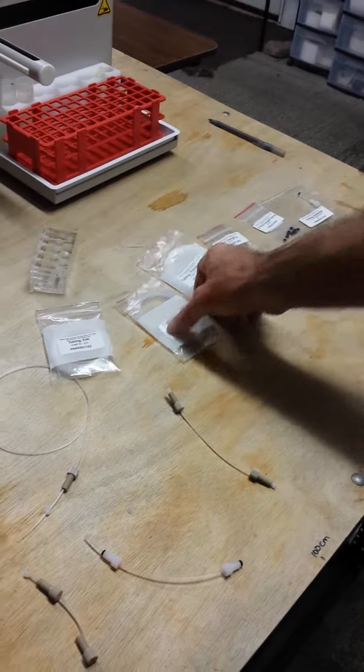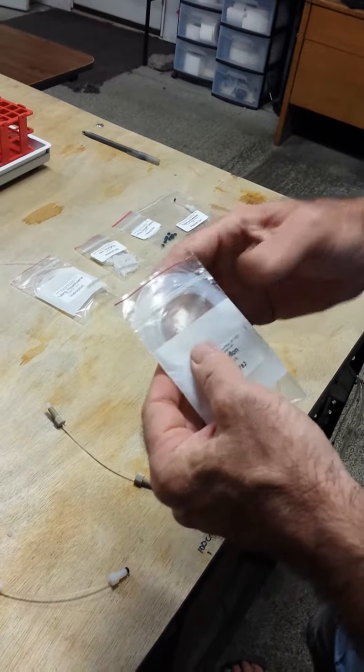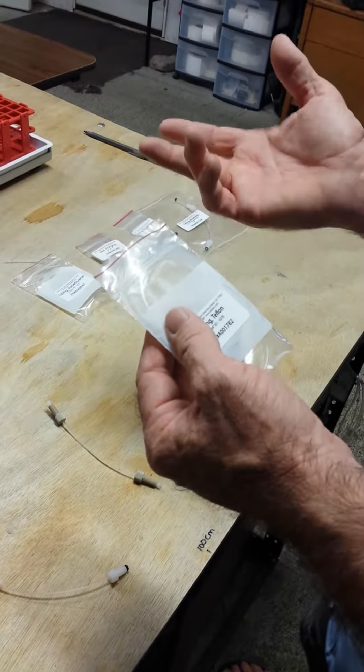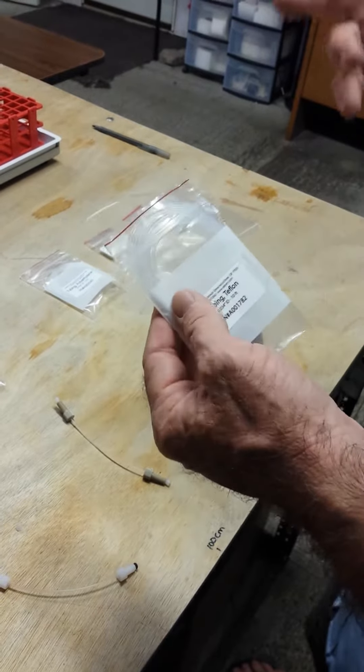On our systems we prefer Teflon, only Teflon. You have all IDs available with Teflon. You can have as little as 0.015 all the way up to 0.06; you can flange it all.